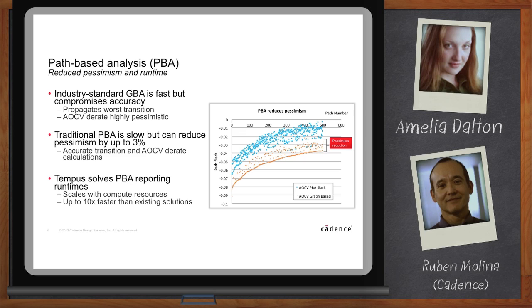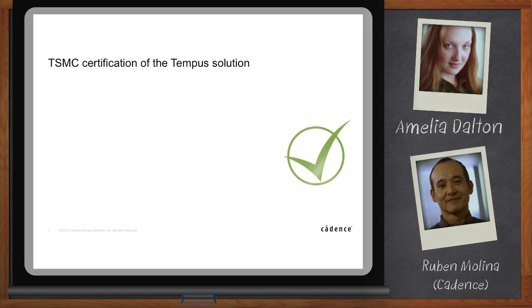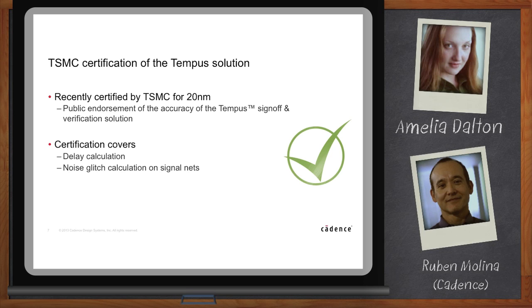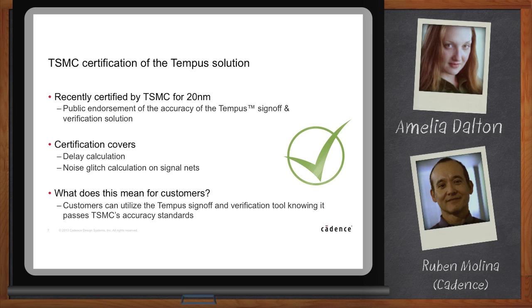So, Ruben, I also heard that TSMC certified your tool for accuracy at 20 nanometers. Tell me more about that. What about that improving accuracy part? Yeah, that's right. So TSMC is one of the largest foundries in the world. And they have very rigorous certification criteria for sign-off tools. At the 20 nanometer node, they realized that they really have to make sure that the tools that they're using and that they may be recommending to their customers have all of the capabilities to make sure that the design is going to work once it's taped out. They took a hard look at Tempus. They certified it for delay calculation and noise glitch, and we passed. And what this really means to the customers is that they can utilize Tempus with TSMC as their foundry, knowing that it's passed TSMC's rigorous standards.